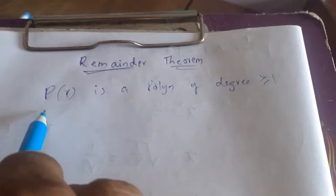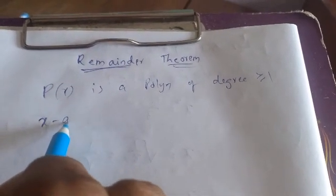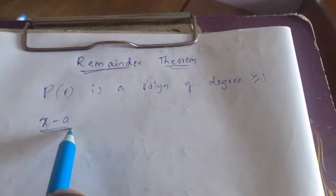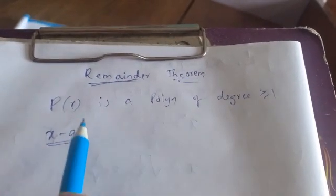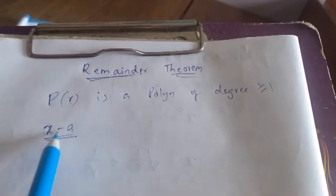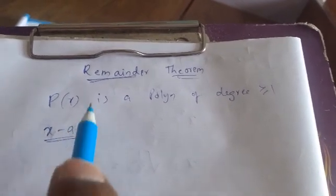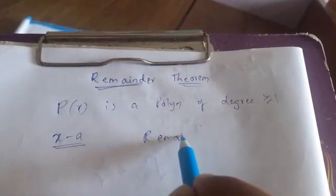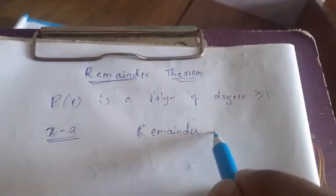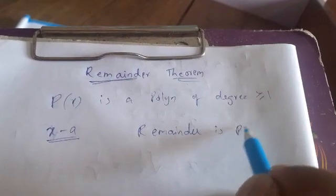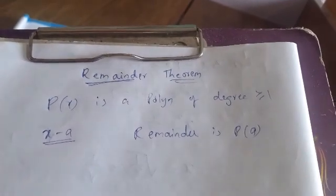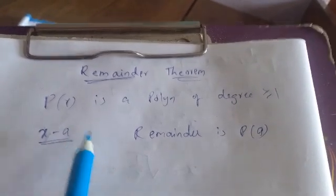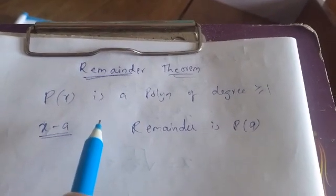If P of X is divided by X minus A — X minus A is a linear polynomial — then the remainder is P of A. This is the remainder theorem.